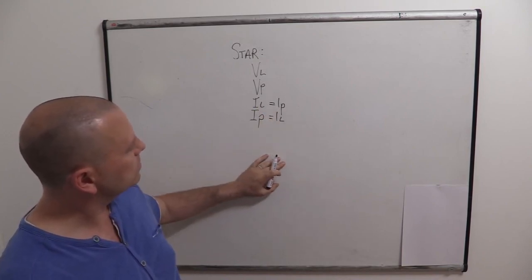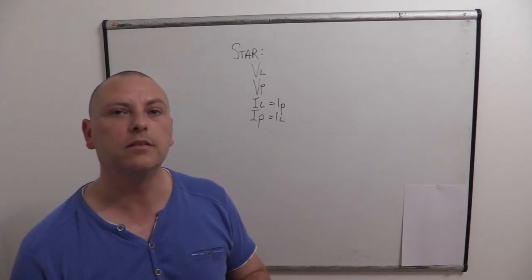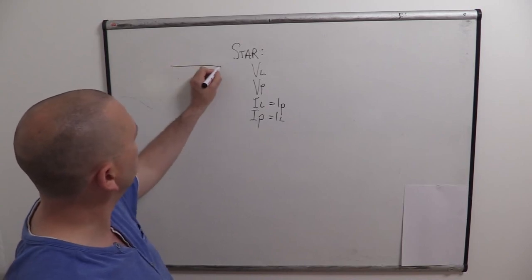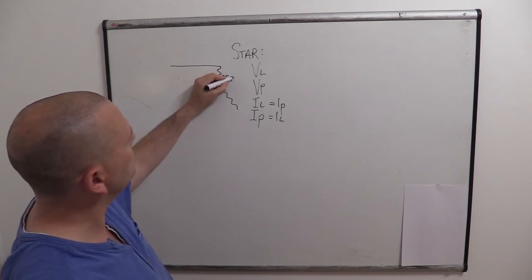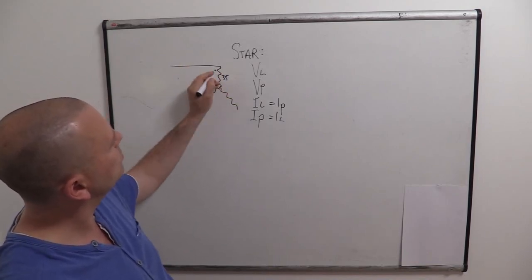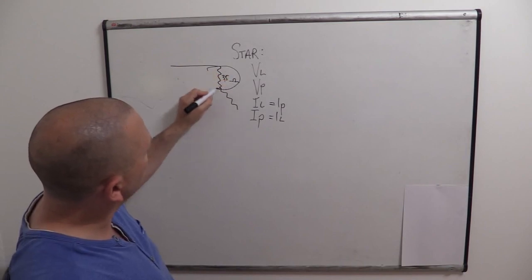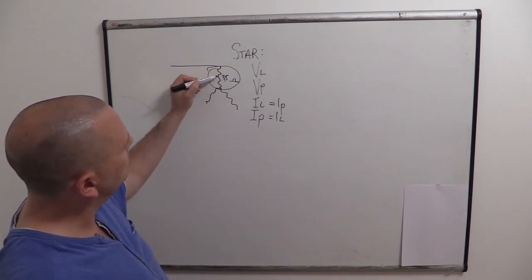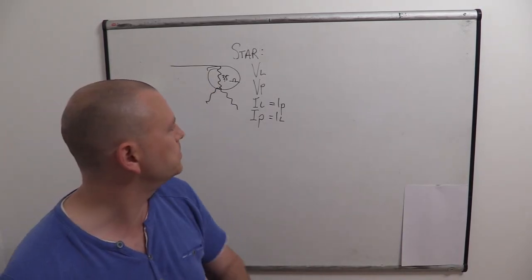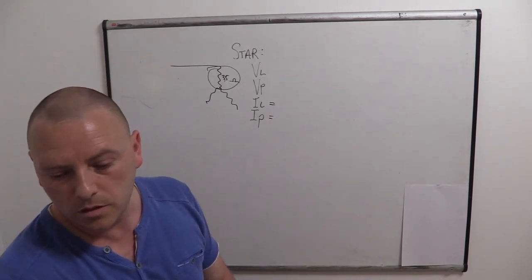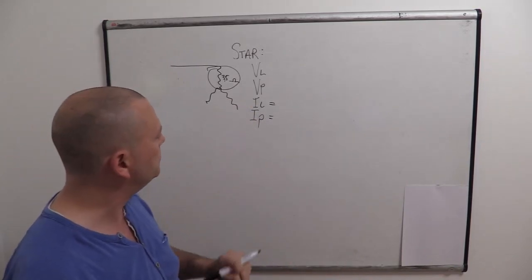But we still need to know how to calculate either one of them. And if you know the resistance of one, then we might as well, you know, if this is our star system and we know the resistance of one of them, 35 ohms. If we know one of them, then let's kind of zoom in, calculate the phase current, and use that for all of them because they're going to be the same.